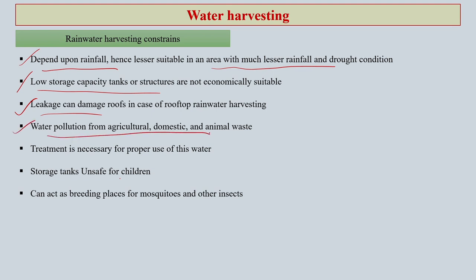Water pollution is another aspect — if you have successfully done the water harvesting and stored it, but the water stored is already contaminated, it is of no use. It is important to check the water pollution level and surrounding agricultural, domestic, and other waste nearby. Treatment is necessary for proper use. Sometimes storage tanks in village areas could also be unsafe for children — small kids can fall into deep holes or structures. This is a very practical constraint.